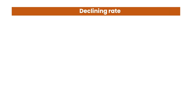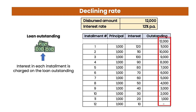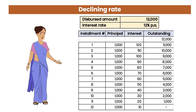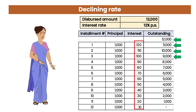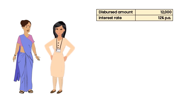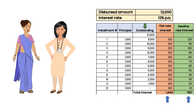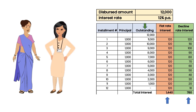So, now let us understand the two methods of interest rate calculation in detail. In the flat rate method, the interest in each installment is calculated on the original loan amount that was disbursed. Since the original disbursed amount remains unchanged, the interest amount in each installment also remains unchanged — that is why it is called the flat rate. On the other hand, in the declining rate method, the interest amount in each installment is calculated on the principal outstanding amount that remains with the client after payment of the last installment. On a loan of Rs 12,000 at 12% per annum, you can see from this table the difference in the interest amount under the two methods. In flat rate, interest is charged on the disbursed amount in each installment, but under the declining method, interest is charged only on the principal outstanding in each installment.